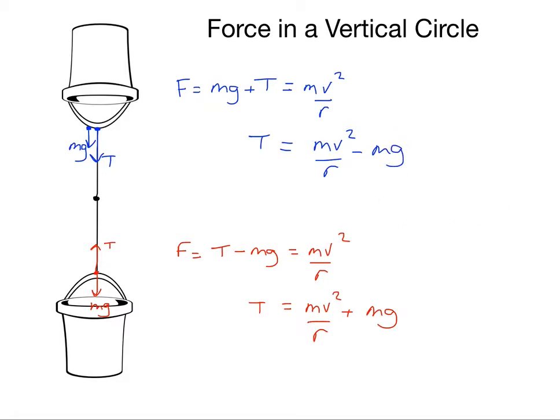Now what does this tell us? Well it tells us that at the top of the circle, T is less than at the bottom of the circle. And that tells us that if I were to be in the bucket, if I were to be the water, then at that point at the top there I would feel lighter, and at the bottom there I would feel heavier.